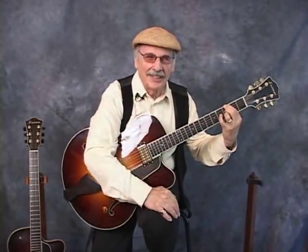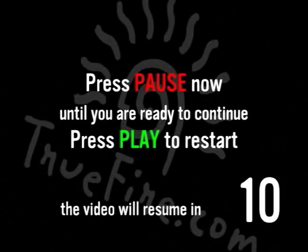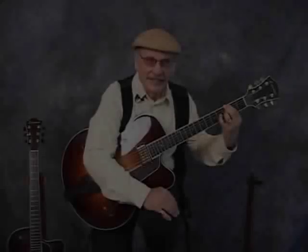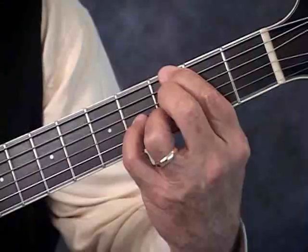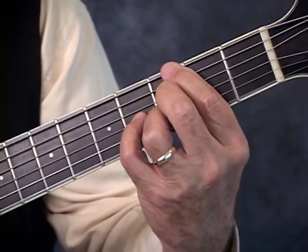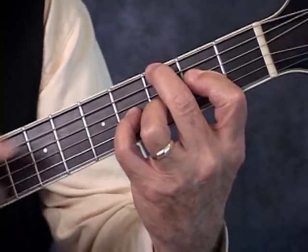Now I'm going to go to a major sixth. The spelling is one, three, five, six. You're on a flatted seven already — see what you can do. I need to bring this down to the sixth. What I do is move this over and move this over, keeping these two the same. There's your major sixth.